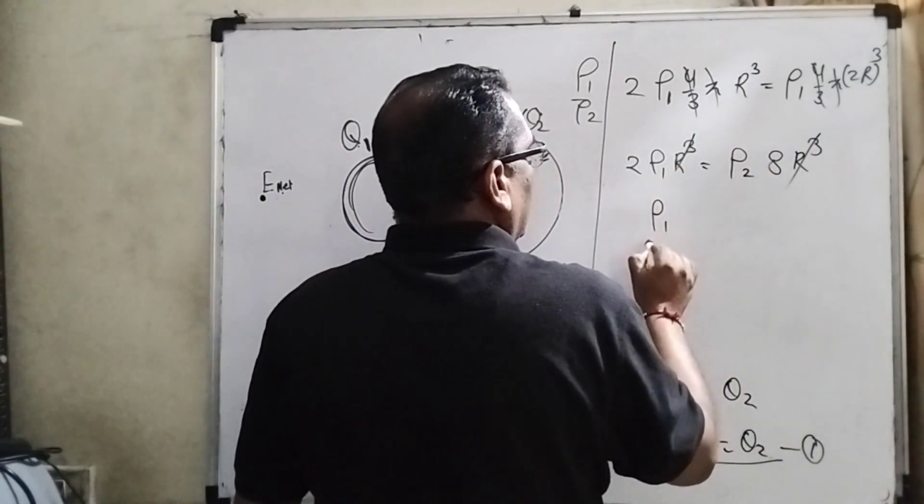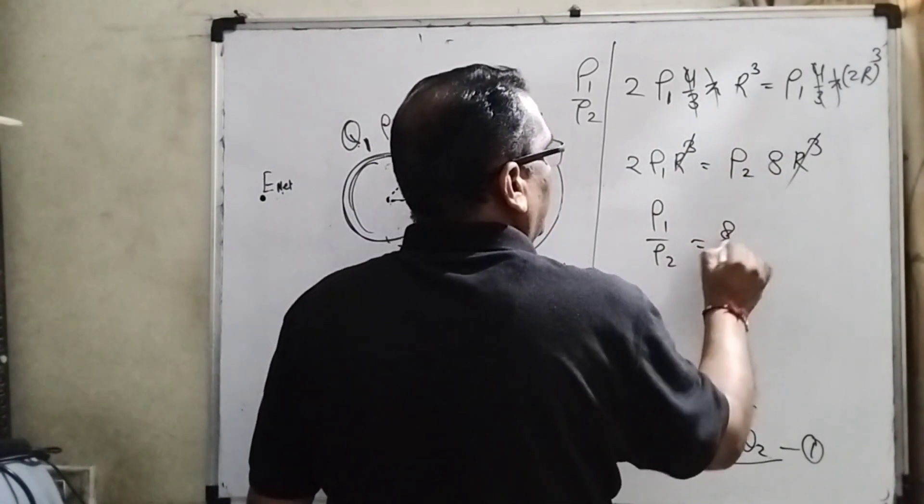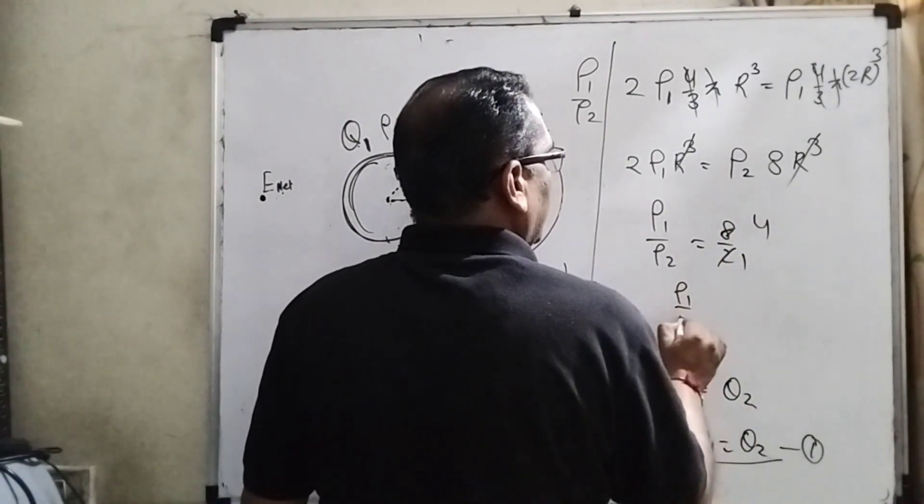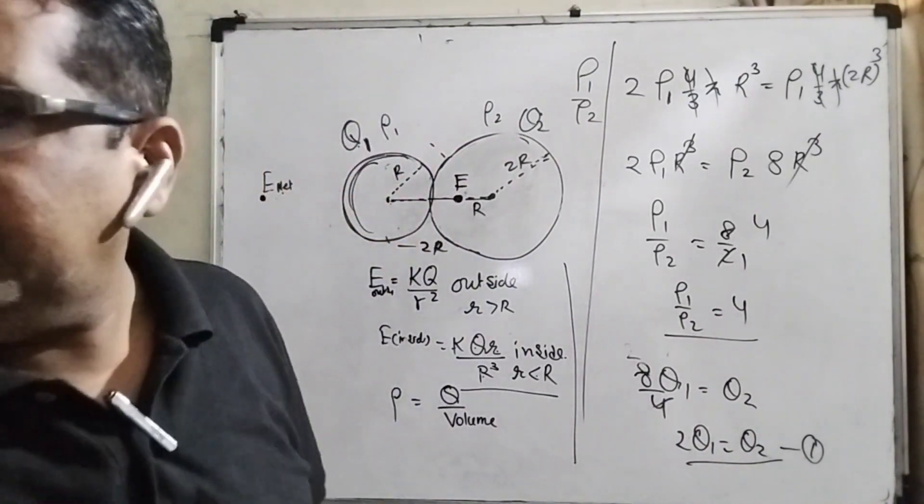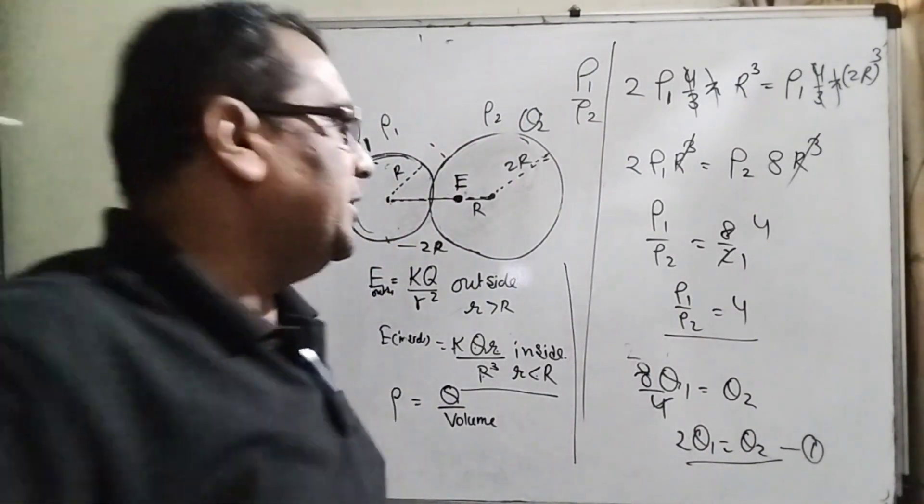Here 4 by 3 pi cancel out. 2 rho 1 r cubed, rho 2 here 8 r cubed. R cubed cancel, rho 1 and rho 2 is 4. So in the given option, option D is the correct.